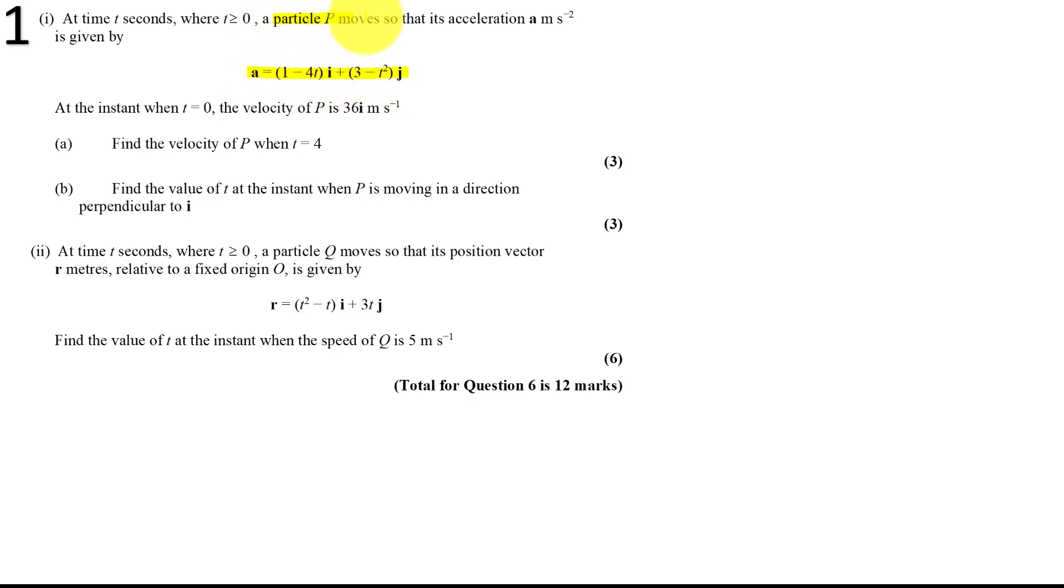Now a particle P moves so that its acceleration A, and we know that because it's meters per second to the minus two, is given by this here. Now this is an important piece of information. When they add anything in these columns in the question, we know we have to use it at some stage. So at t equals zero, the velocity of P is 36i, so that's just going in the i direction. Part A, find the velocity of P when t equals four.